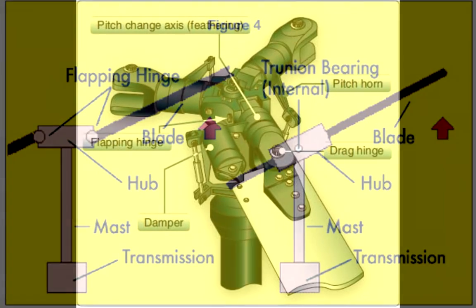Here's a slightly more detailed diagram of what that flapping hinge looks like — you can see where it says 'Flapping Hinge' on the left-hand side there. It gives you a better look at how that entire blade can lift up or down. It's worth mentioning that flapping happens automatically; it's not something that the pilot has to do. It just responds automatically to changes in airspeed or to gusts of wind.